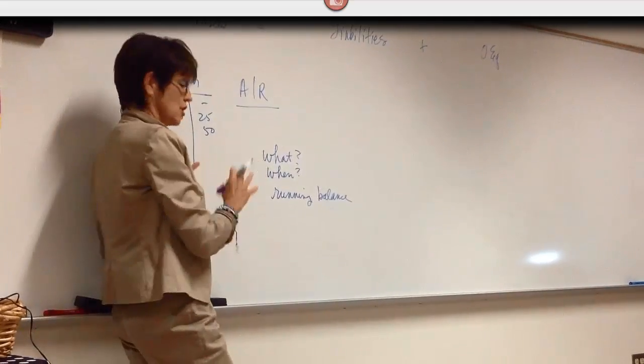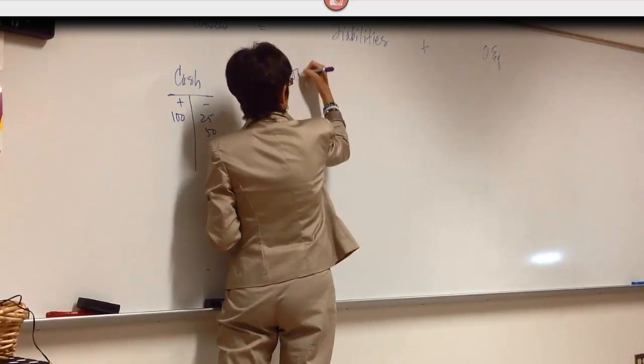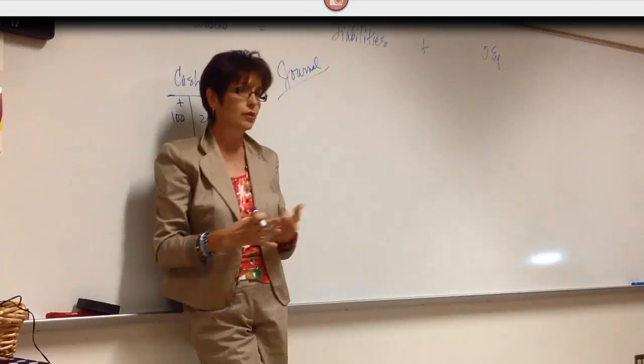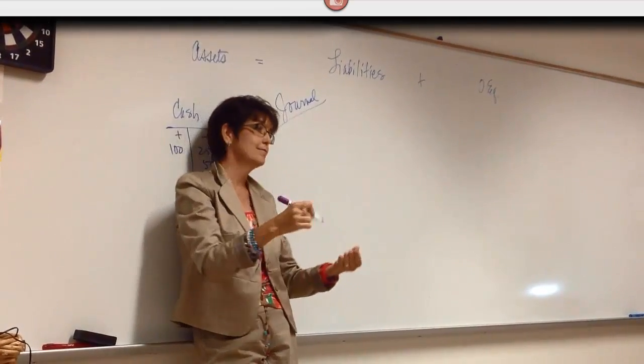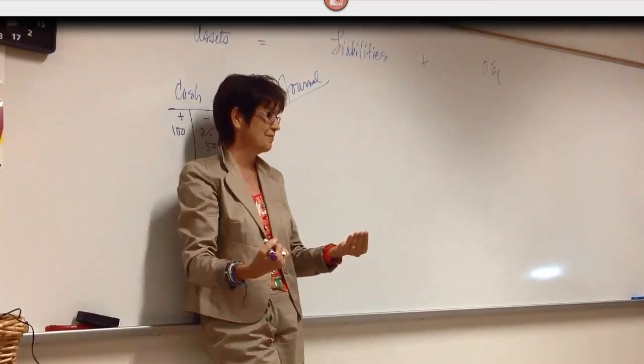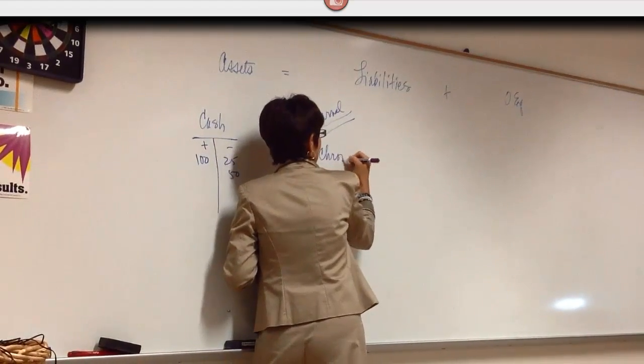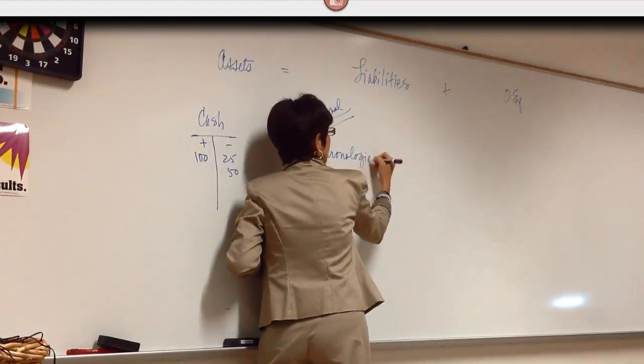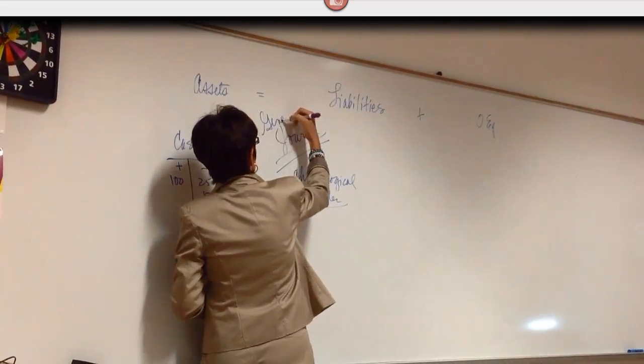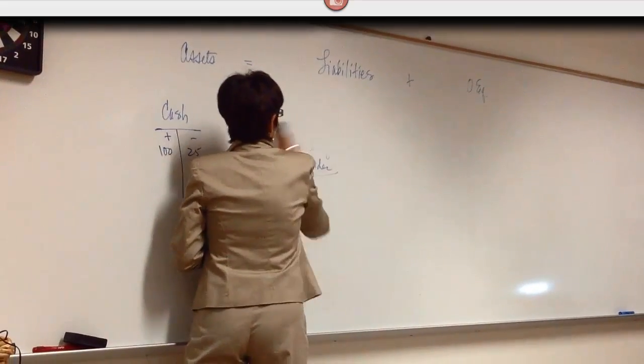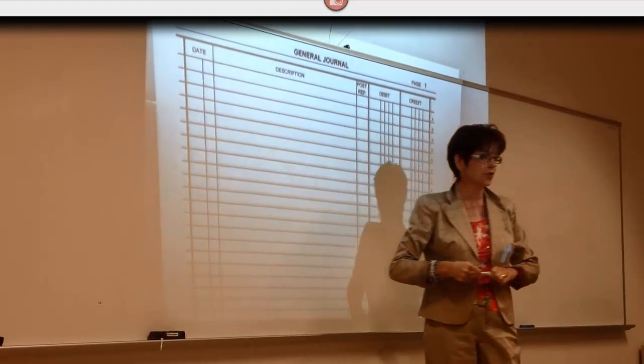Now we just need to say how are we going to keep these records so that everybody understands. One of the ways that we're going to start is what is called a journal. When you think of the word journal, think about your English classes. Write in it, maybe they called it long ago, they called it a diary. So it is in a particular order and that's called a chronological order.